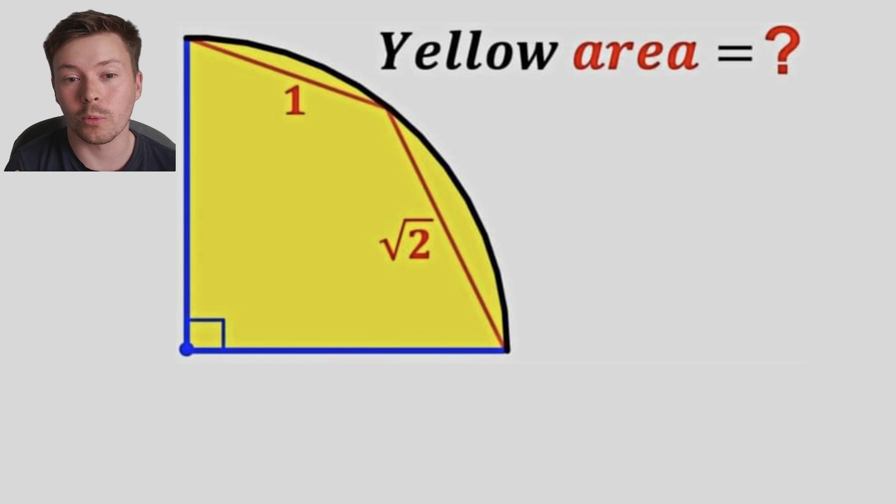Now we don't know the radius, but what we do know is that there's two chords that join up with the corners of the quarter circle and they meet at this point on the circumference. One has a length of one and the other has a length of root two, and that's all the information we've got. So first thing to do is label the vertices. If you want to have a go at this problem yourself, pause the video now and see if you can solve it.